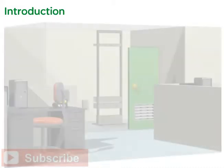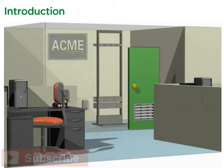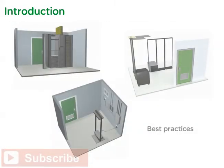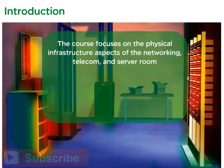In order to demonstrate the execution of a standardized wiring closet design-build methodology, this course is based upon a hypothetical case study. The company we will focus on is called the Acme Classic Auto Company. Illustrations of best practices from multiple networking room design-build projects will be presented. The course focuses on the physical infrastructure aspects of the networking, telecom, and server room — that is, the foundational cooling, power, rack, and security layers that support the IT and network systems residing inside the physical space.